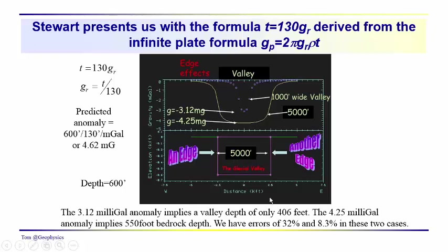The formula is good for wide valleys — at 6,000 feet wide the error would probably drop to 5–6%. We also note that we have to take our estimate of G at the maximum or minimum value of the anomaly, getting away from the edges. The half-max or half-min point is directly over the edge of the valley. The density contrast is negative, and we see errors of 32% for the 1,000-foot wide valley and 8.3% for the 5,000-foot valley. Edge effects are important to keep in mind.